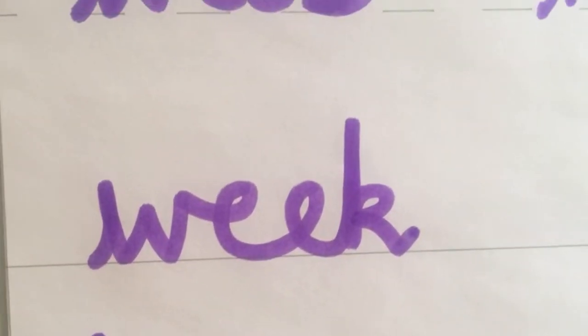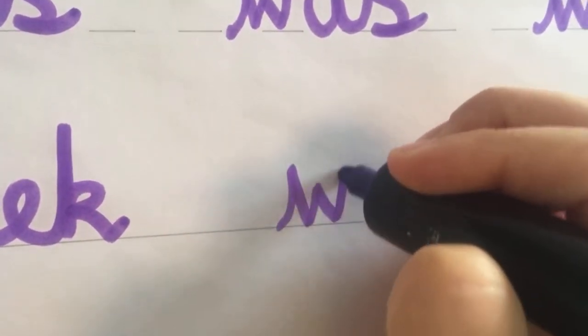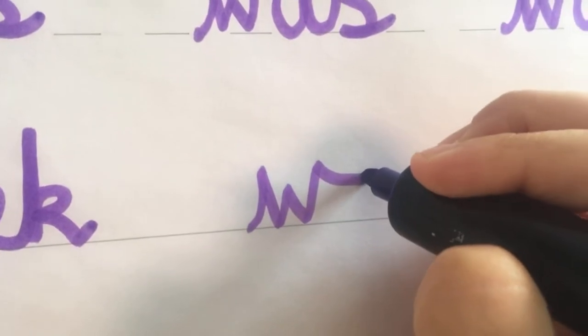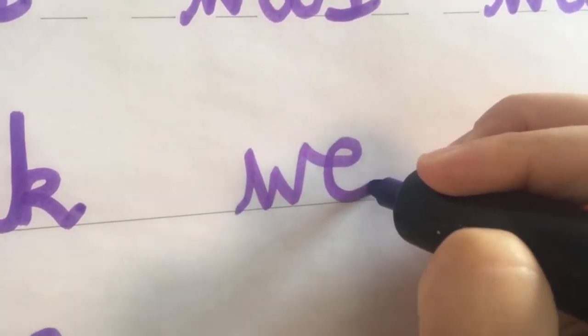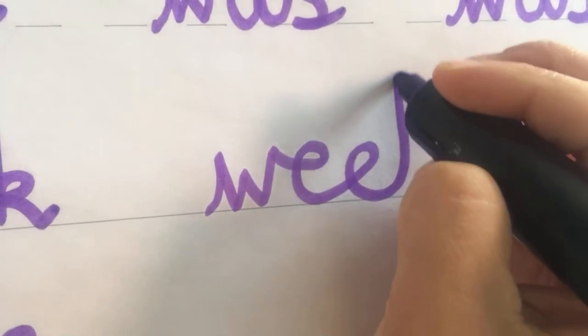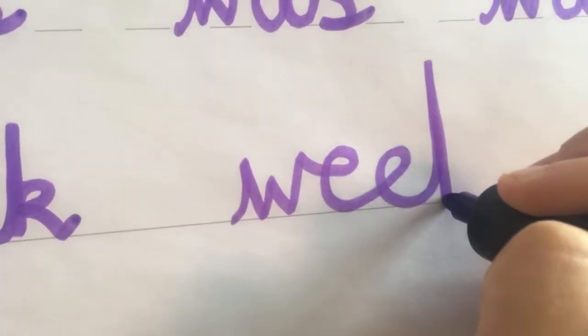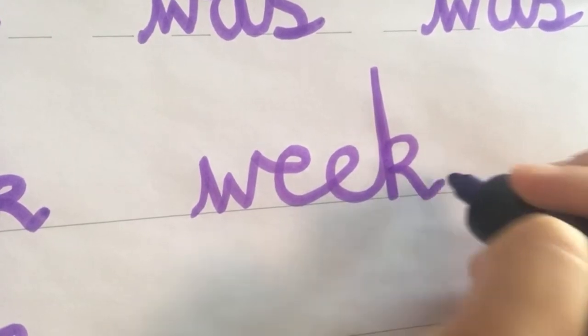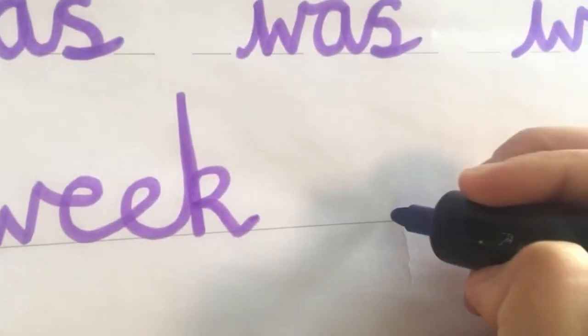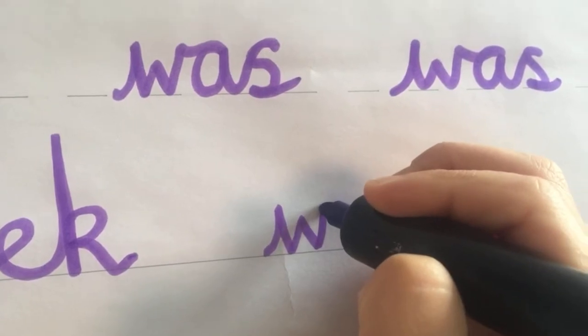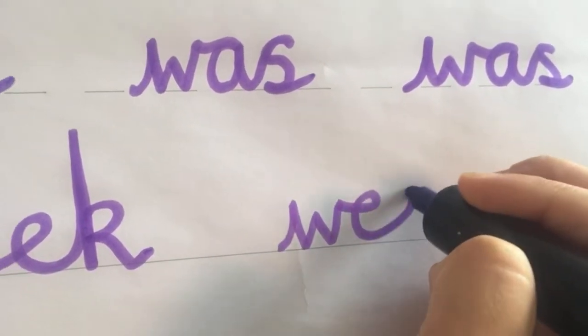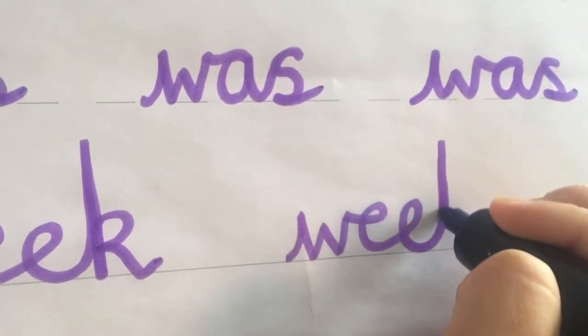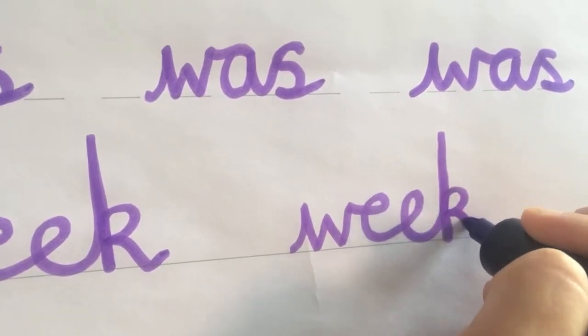The next word we're going to focus on is the word week. So start on the line, my W, down, up and around for the E, up and around for the other E, up, it's an ascender, down to the line, up again. And kick out. Show you that again, week.